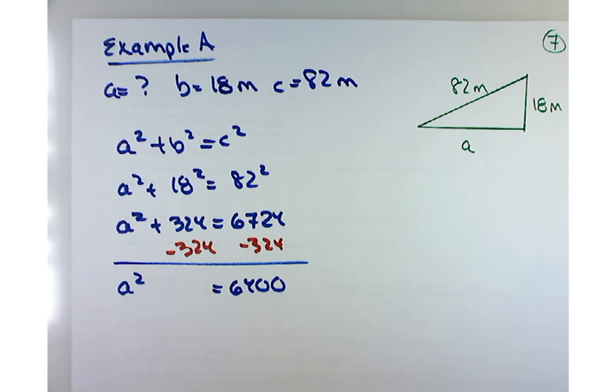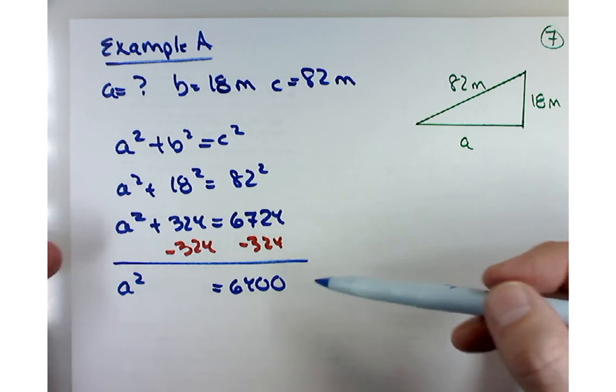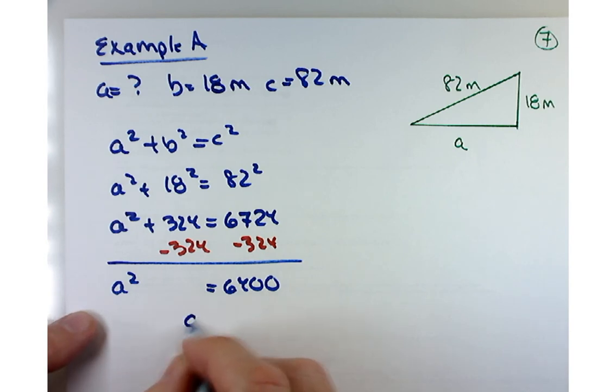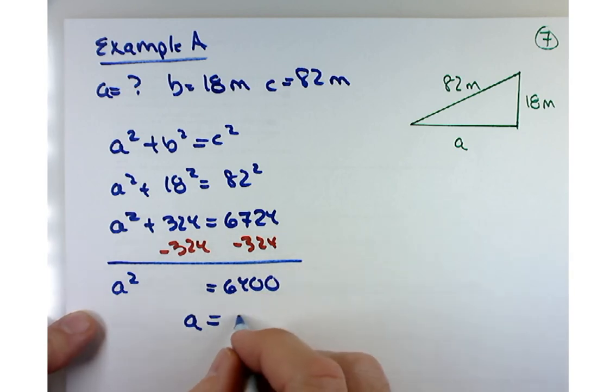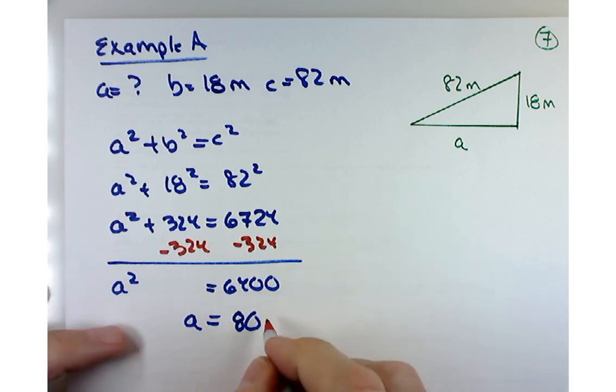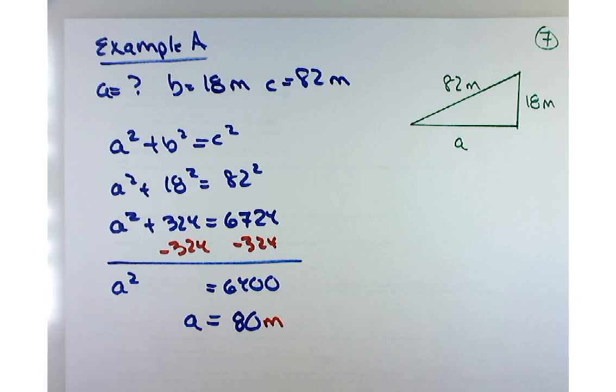That gives me A squared equals 6,400. What's a quick way to get it solved for A? Take the square root on both sides. The square root of 6,400 is 80. Out of politeness and good habit, throw in the units, which would be meters.